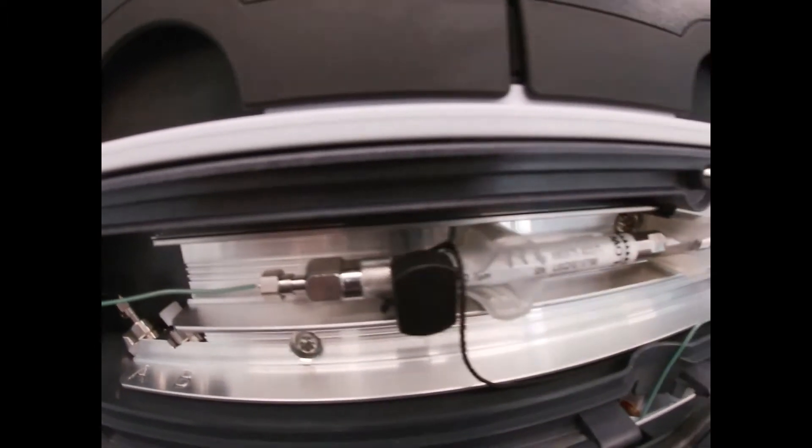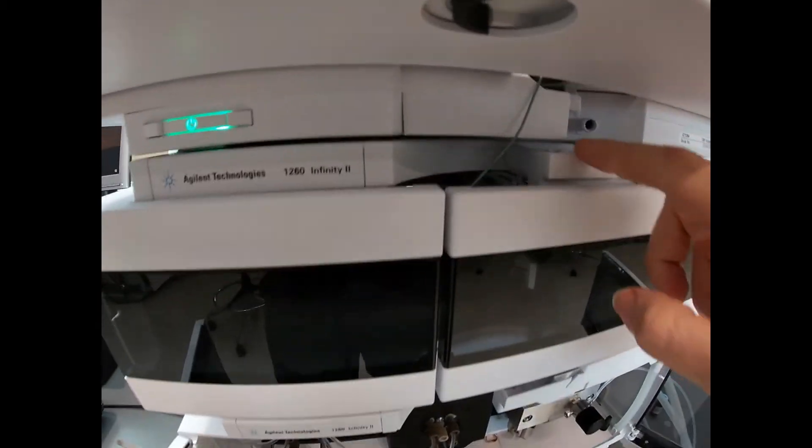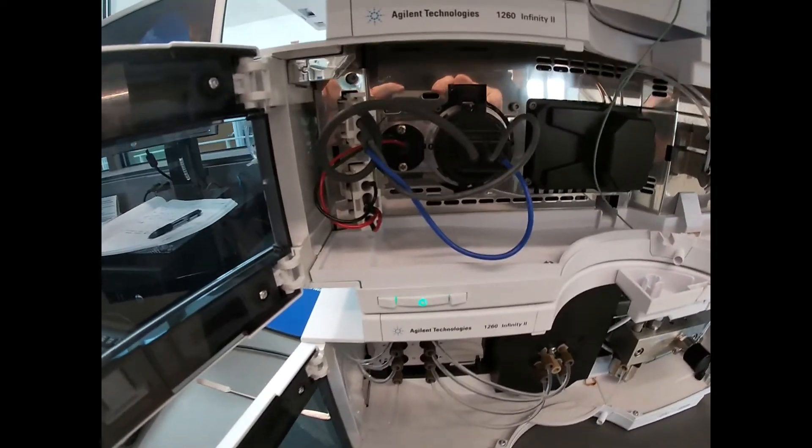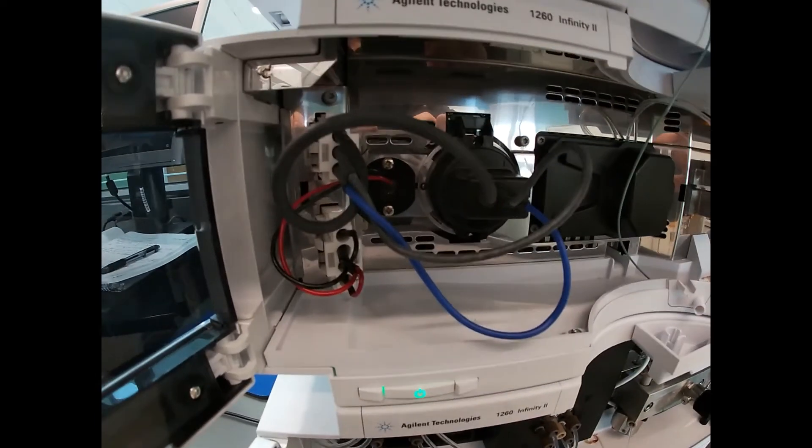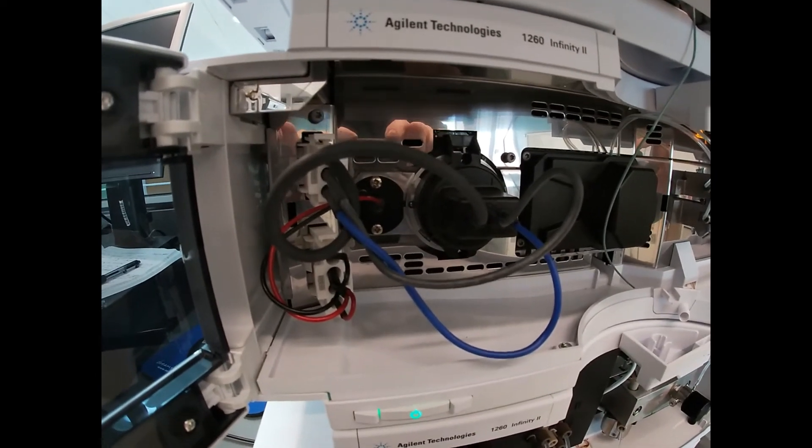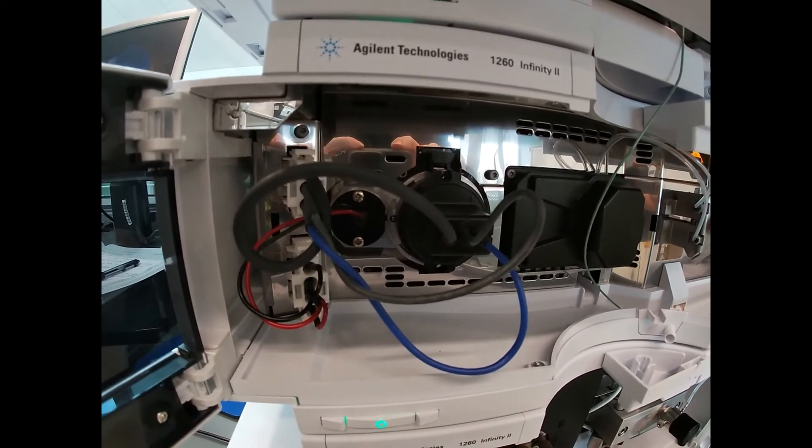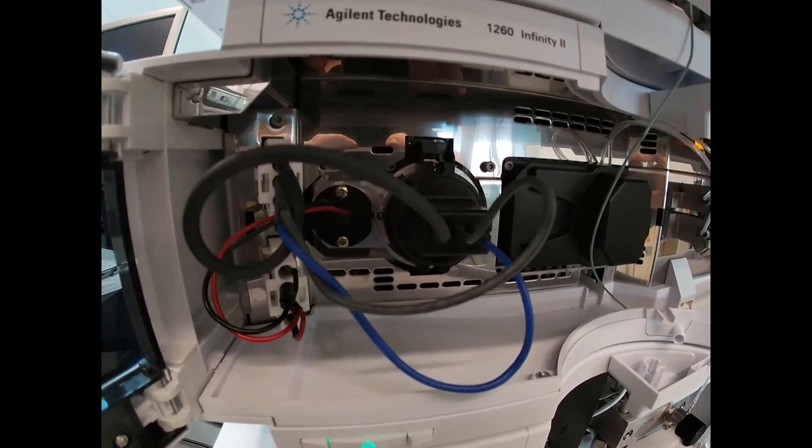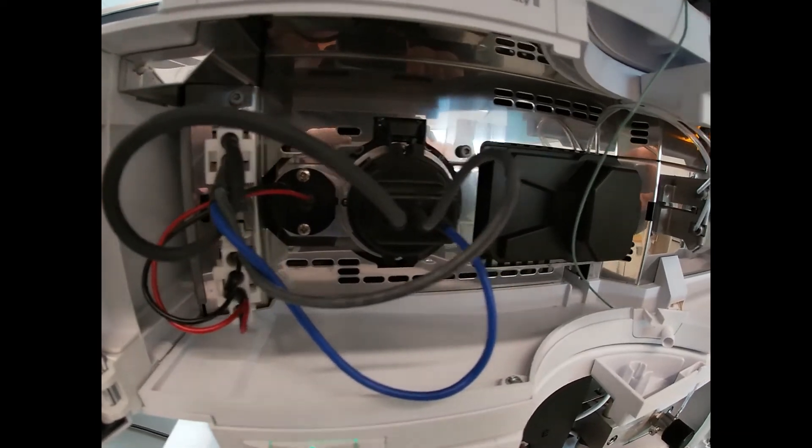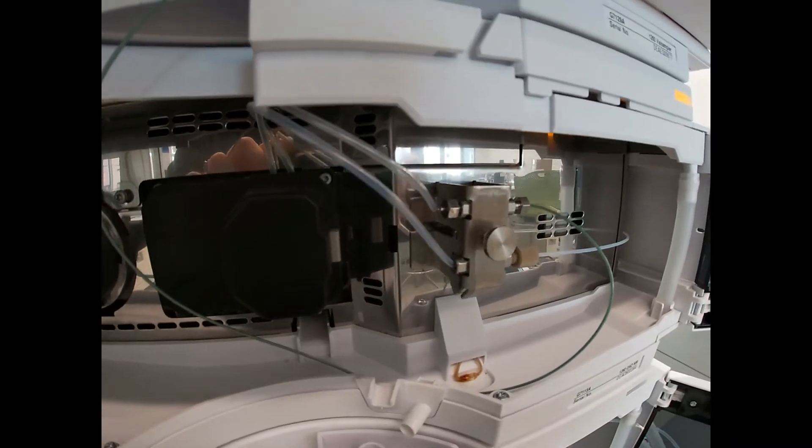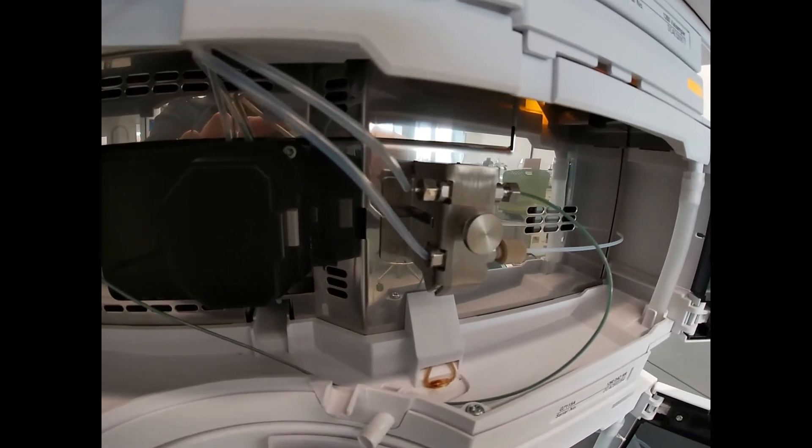Then we pass down to our next compartment where we have our UV source. We have a deuterium lamp and a tungsten lamp that provide UV and visible light or electromagnetic radiation. We have a flow through cell where we pass the light through our sample and detect absorbance.